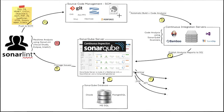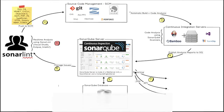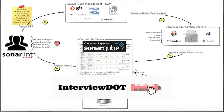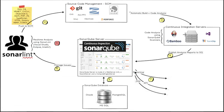Once the code is pushed to source code management, it will be pulled by the continuous integration server, which is the CI/CD pipeline. In the continuous integration server, it's going to use SonarQube for code analysis. A set of rules will be applied and checked in the code, and then it will publish the analysis report to SonarQube where it will be persisted.